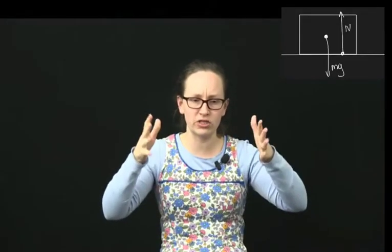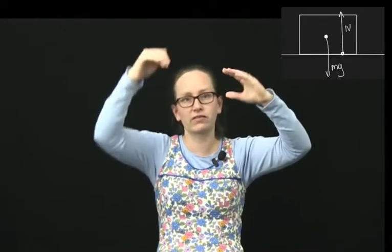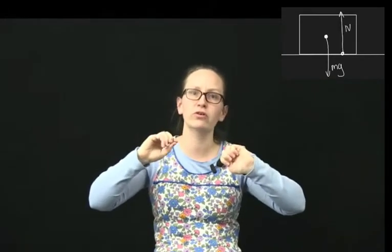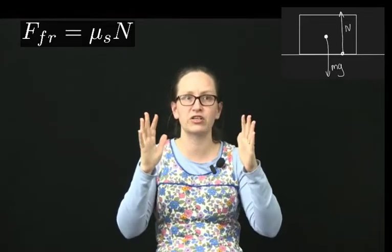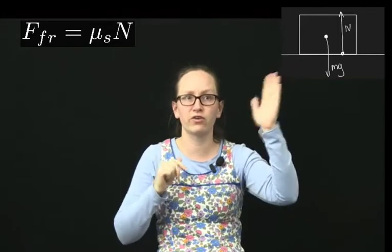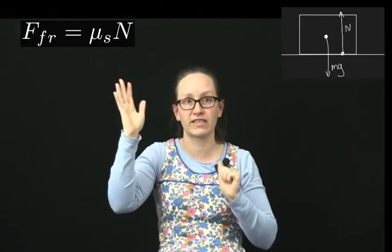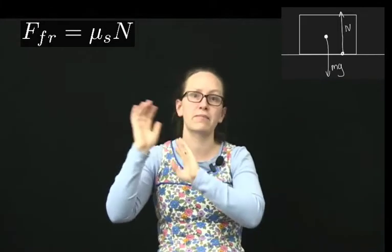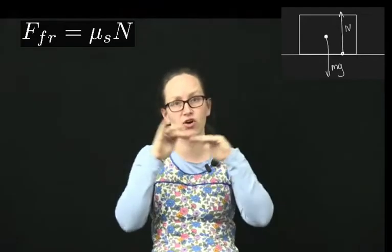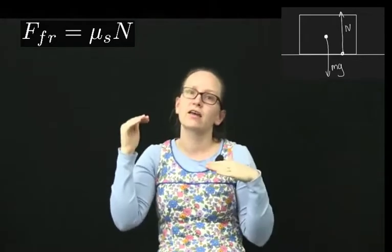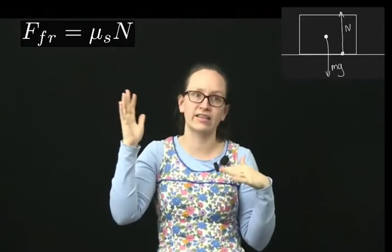An object which is sitting on a surface has its weight force acting down and a normal reaction force acting upwards. The frictional force is actually proportional to this normal reaction force. So the frictional force for static friction can be written as Ffr equals the coefficient of static friction, which is a dimensionless constant and depends on the two surfaces, times the normal force acting on the body.